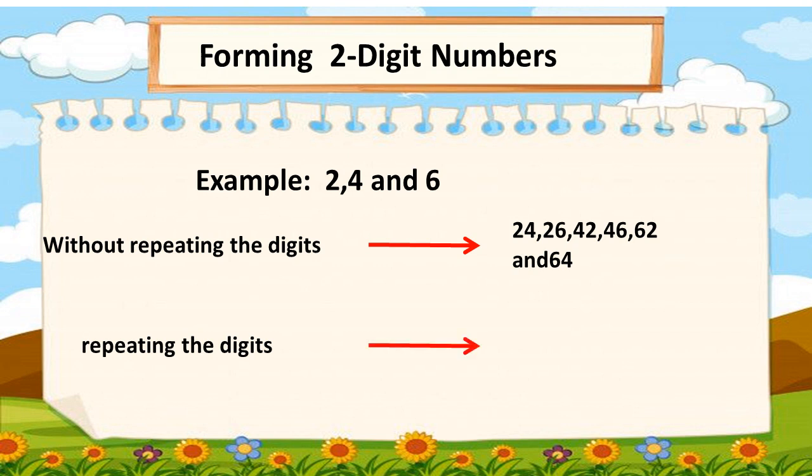Repeating the digits, we can form three more two-digit numbers. These are twenty-two, forty-four and sixty-six.